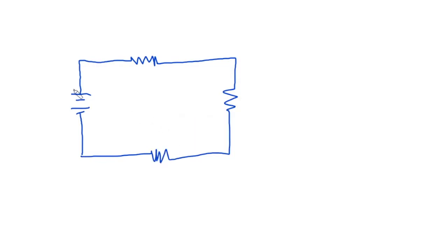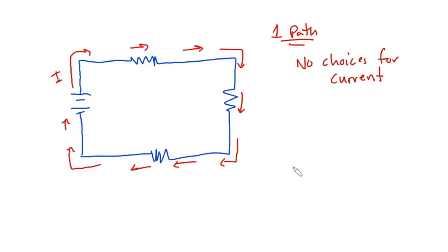See that there's current flow. So there's going to be some I that is going to come up here, make a right. It's going to go through the resistor. There is only one path that the current can follow. And then it comes back to the battery. So there is only one path, no choices for current.